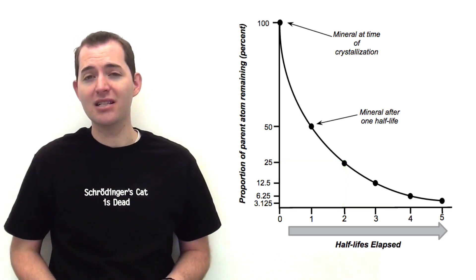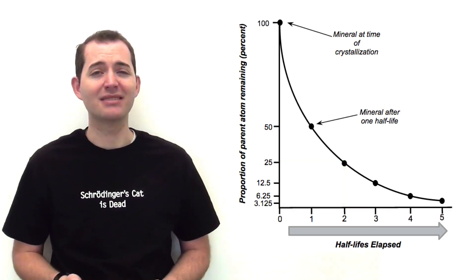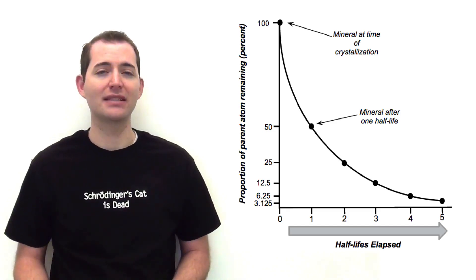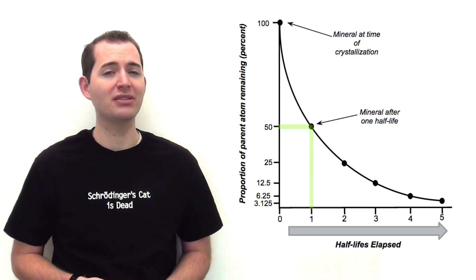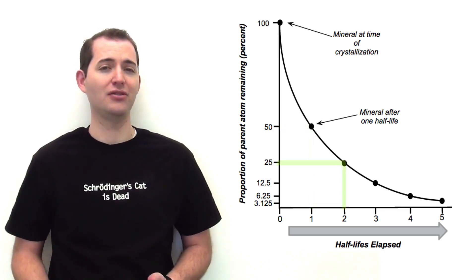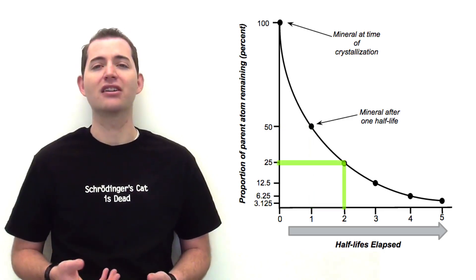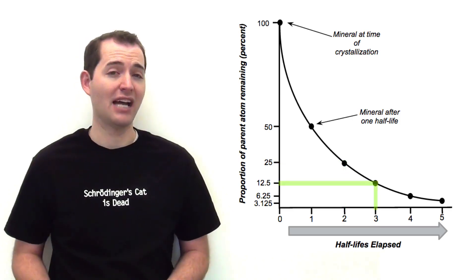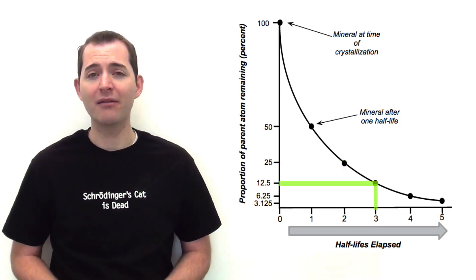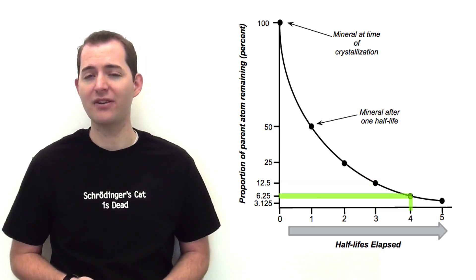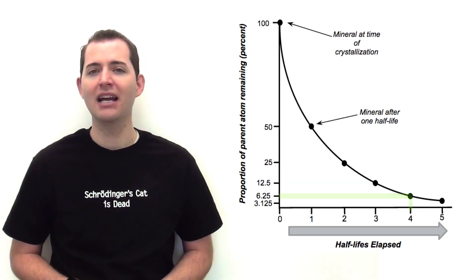Continuing this pattern of half of the parent atoms decaying into daughter atoms every half-life: after one half-life there are 50% of the parent atoms remaining; after two half-lives, 25%; after three half-lives, 12.5%; and after four half-lives, 6.25% of the parent atoms remain.